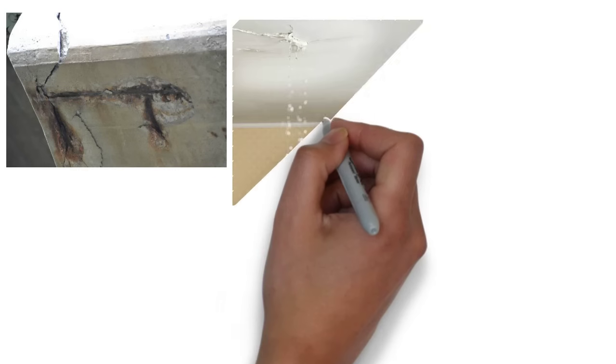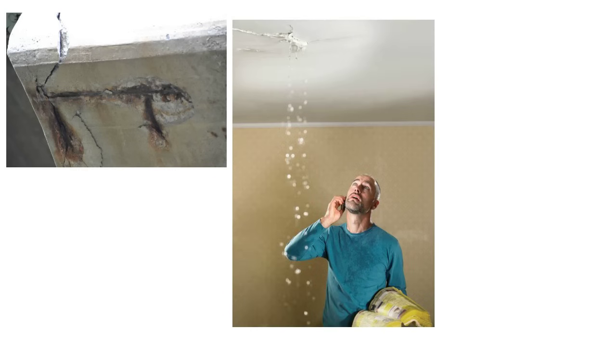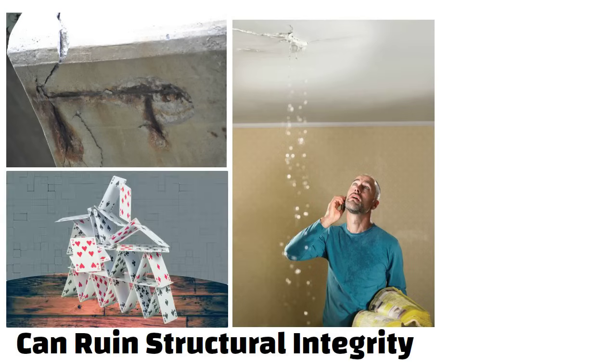Moisture also causes metals to rust. Waterproofing also prevents damage caused due to water seepage which can ruin the structural integrity of your home.